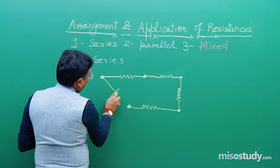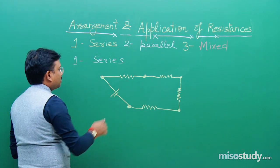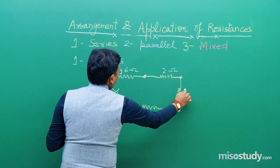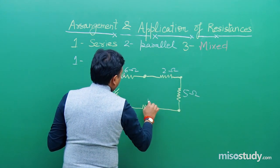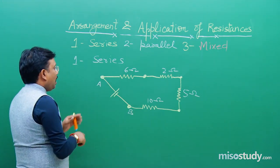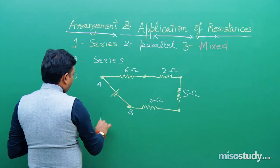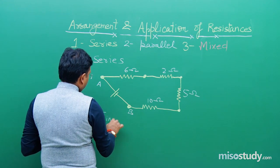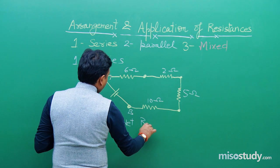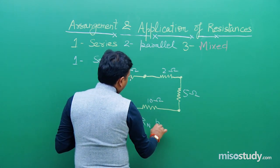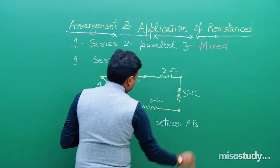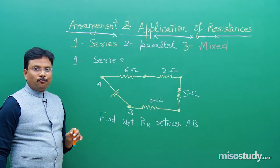A battery is connected, and we have resistors: 6 ohm, 2 ohm, 5 ohm, 10 ohm, between points A and B. In series combination you know back-to-back — the second point of one resistor is connected to the first of the next, and so on. The question is: find net resistance R_n between A and B.